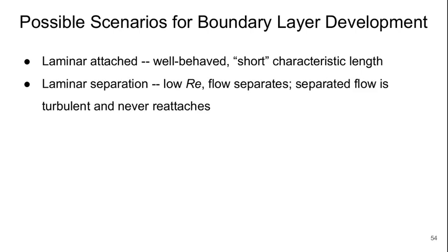We could have laminar boundary layer with separation. This happens at low Reynolds numbers where the adverse pressure gradients are strong enough to cause the flow to separate. And the separated flow becomes turbulent but never reattaches to the surface as we move downstream.